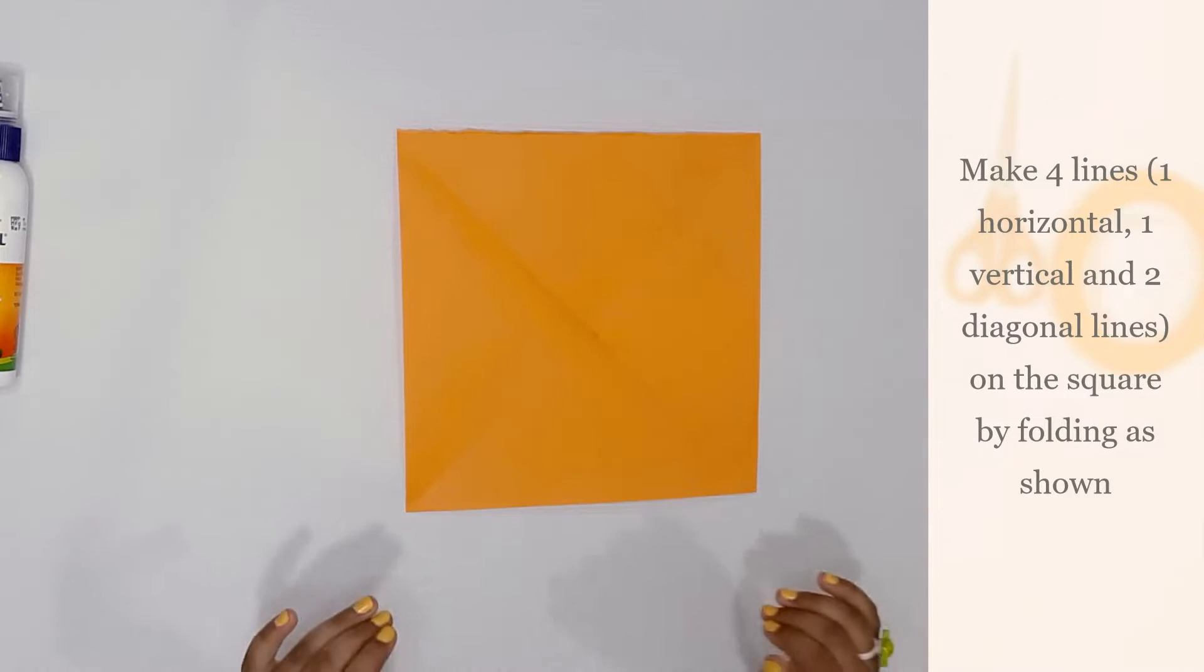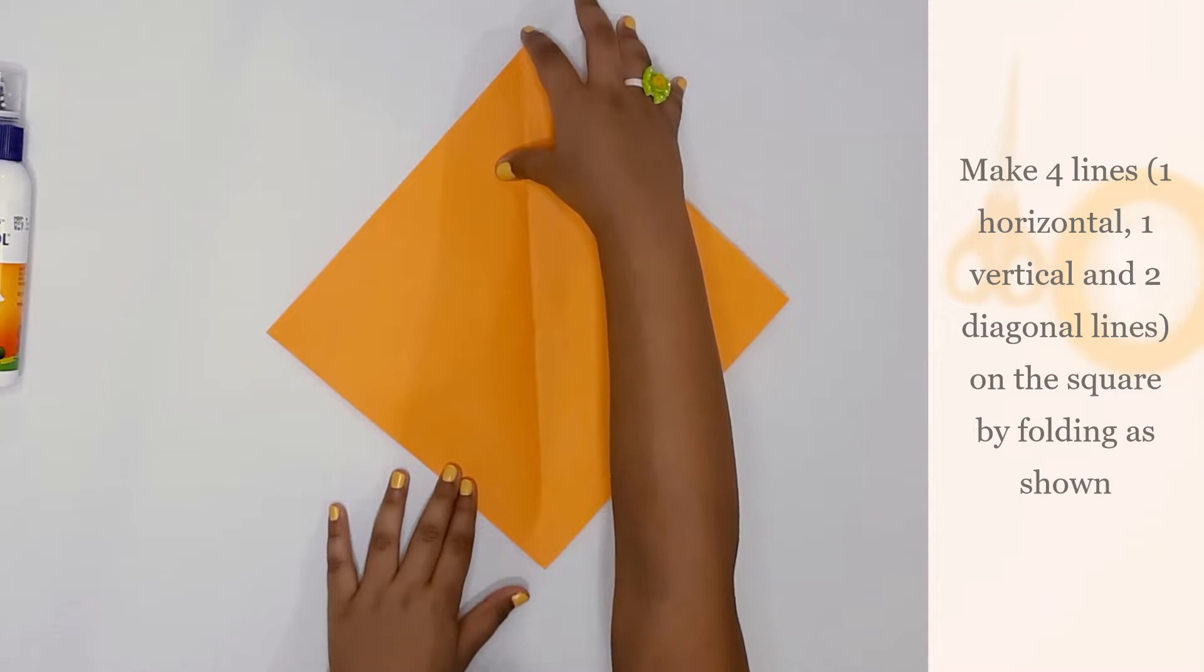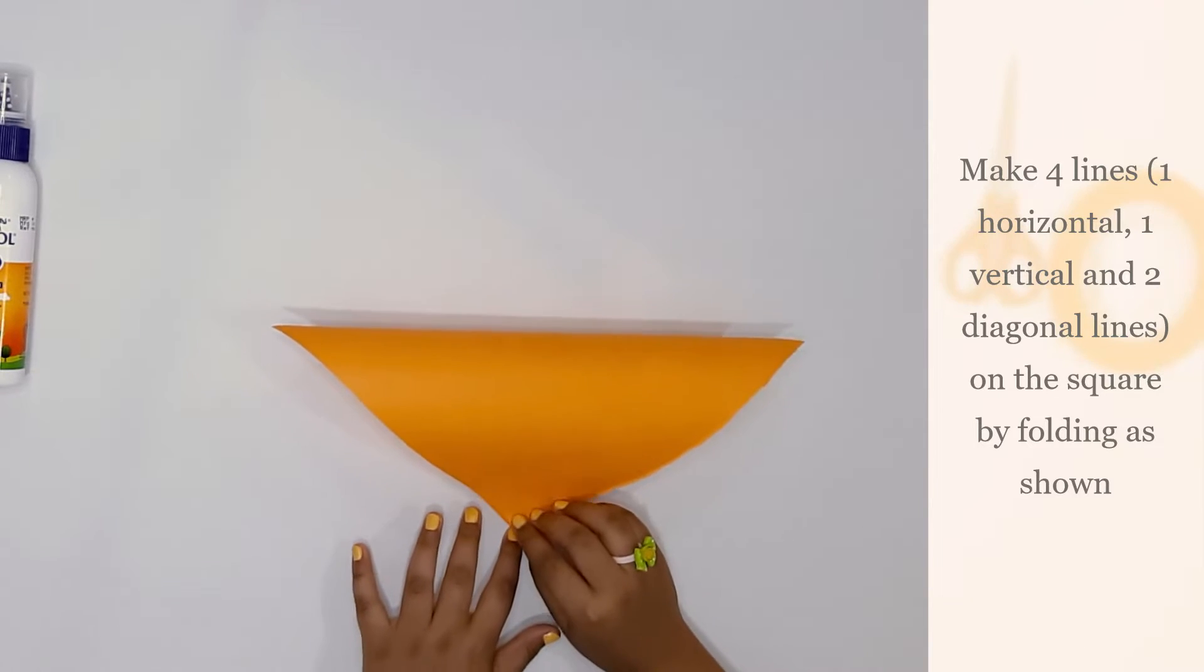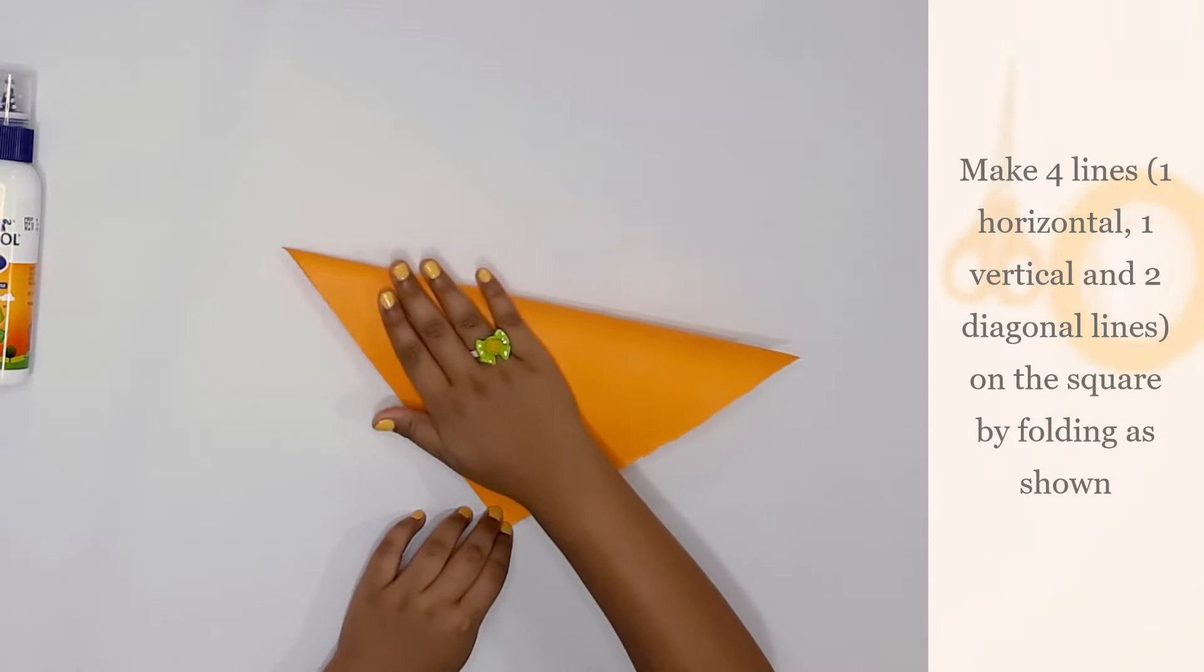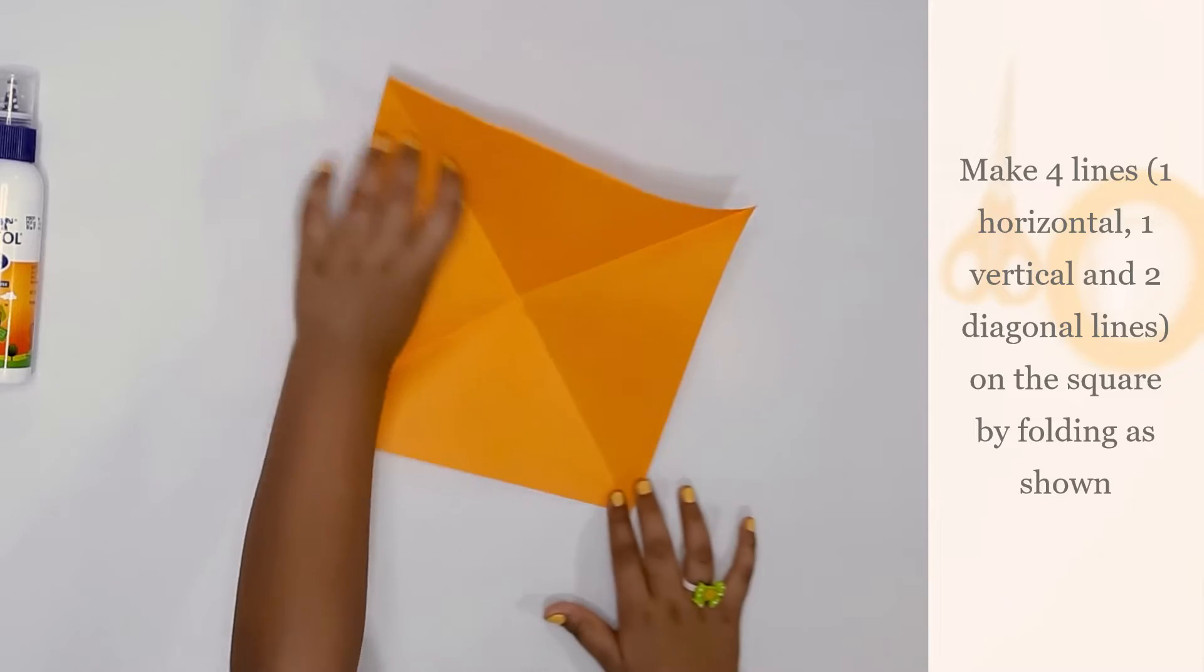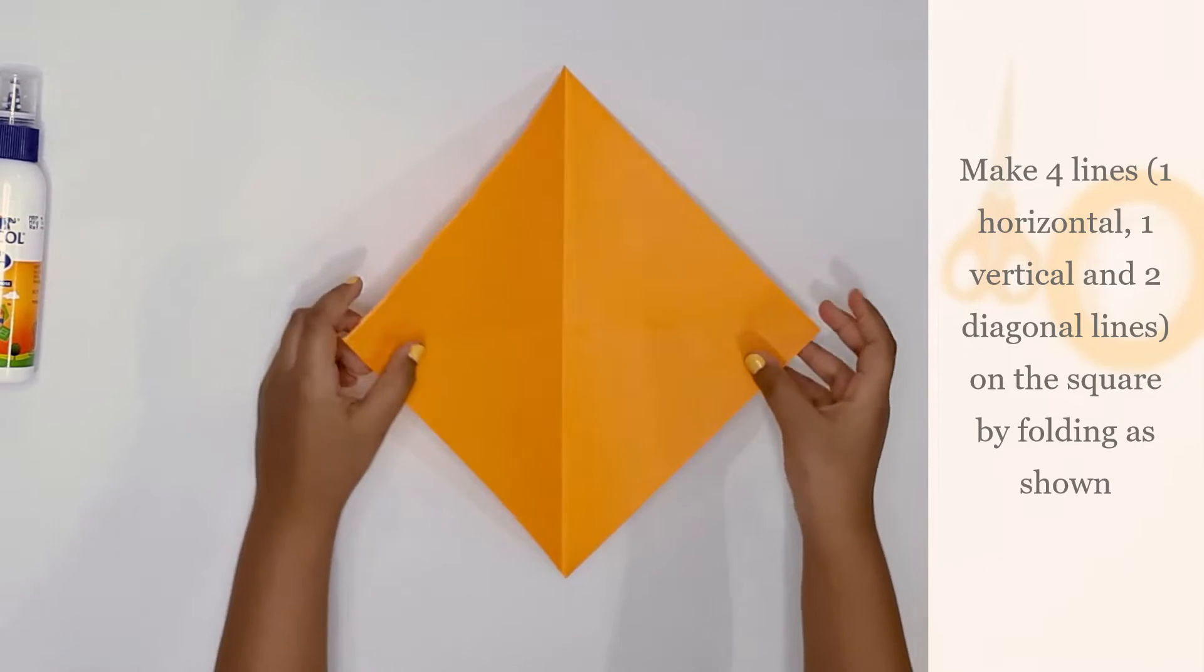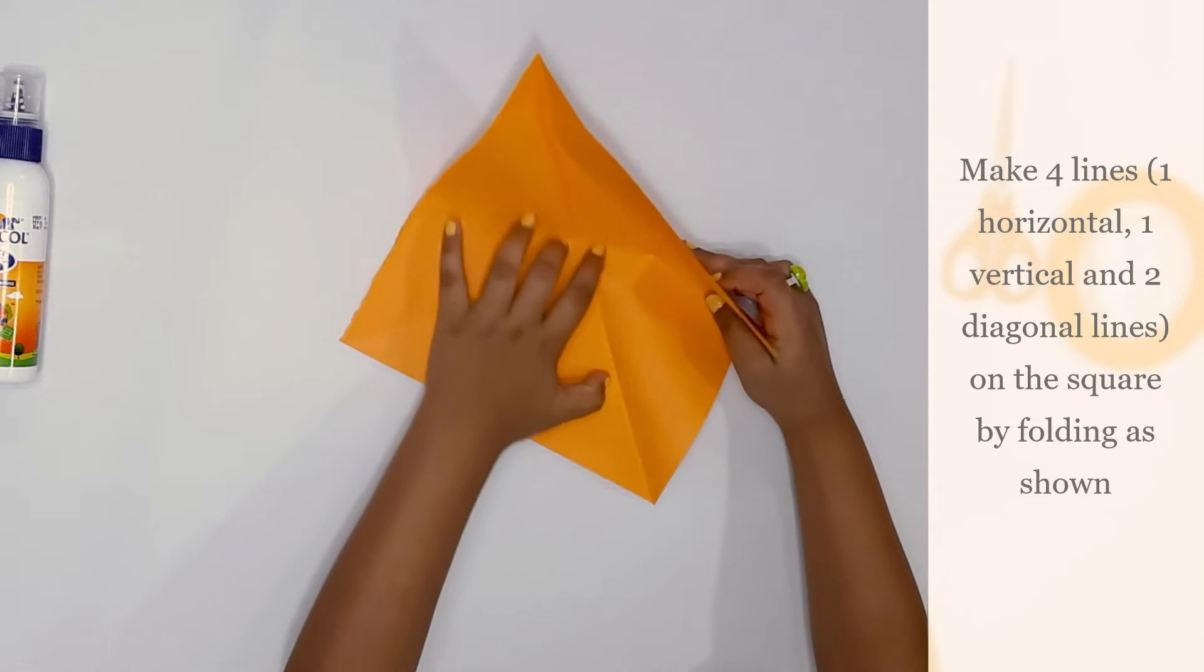So now we'll try to take this corner and then join it to this corner. We have two lines. We have two lines.